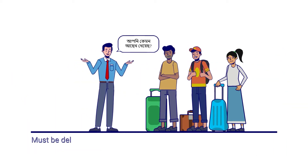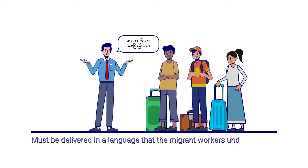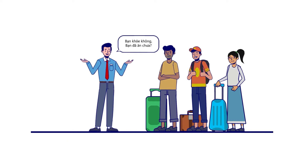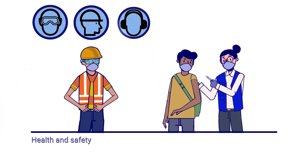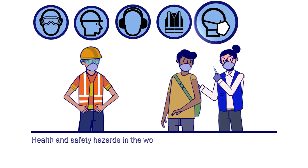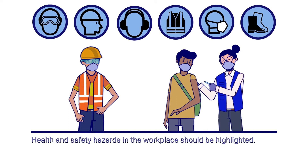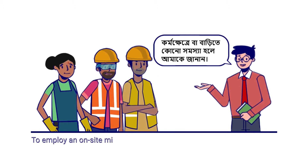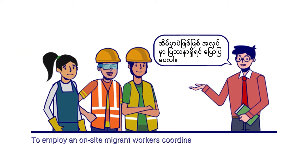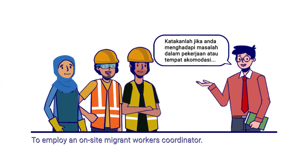The employer should provide migrant workers with post-arrival orientation in a language that the workers understand. Signs, symbols, and other indicators related to health and safety hazards in the workplace should be highlighted so that migrant workers can understand them. Employers are encouraged to employ an on-site migrant workers coordinator, conversant in both the languages of the migrant workers and the employer.